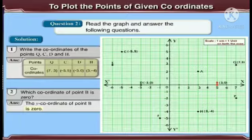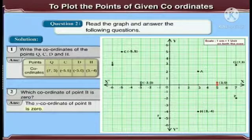And point H lies in the third quadrant where X is positive and Y coordinate is negative. Therefore, its coordinate is (3, -4).